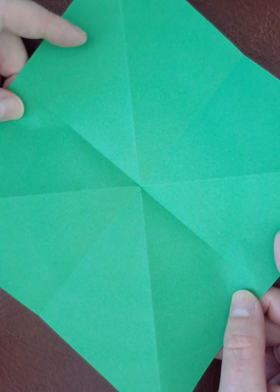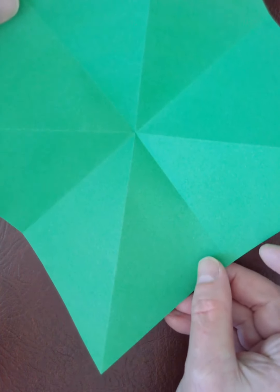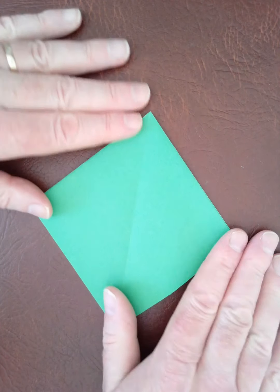Now we've got this union jack sort of shape and then we're going to fold that in to make a square.